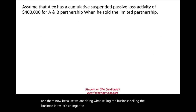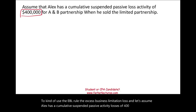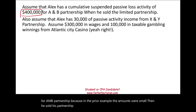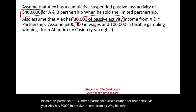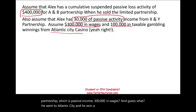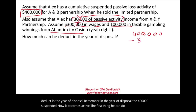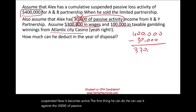Now let's change the scenario to use the EBLL rule. Assume Alex has cumulative suspended passive activity losses of $400,000 for the A and B partnership. He sold his limited partnership. For that particular year, Alex has $30,000 in passive income from XY partnership, $300,000 in wages, and $100,000 in gambling winnings. In the year of disposal, the $400,000 suspended becomes active. He can first use it against the $30,000 of passive income, bringing it down to $370,000.